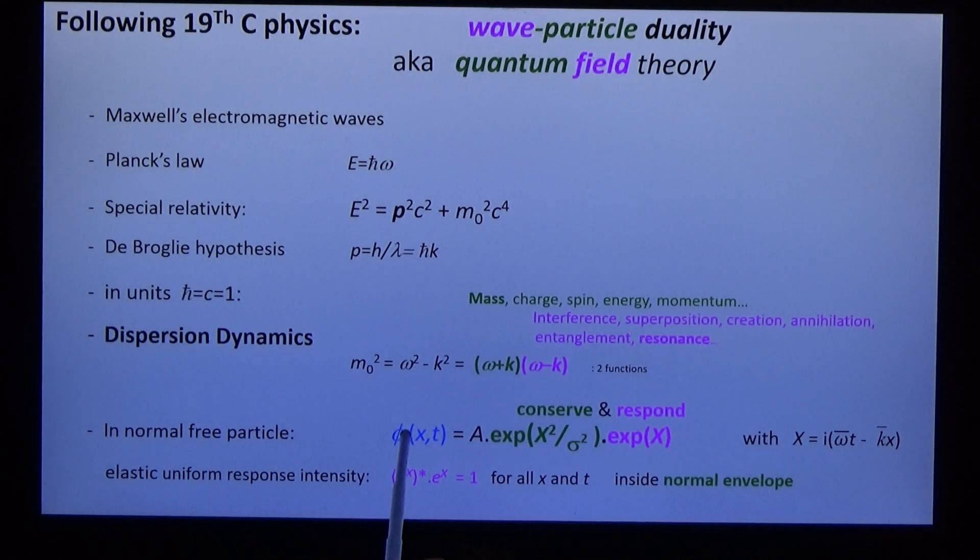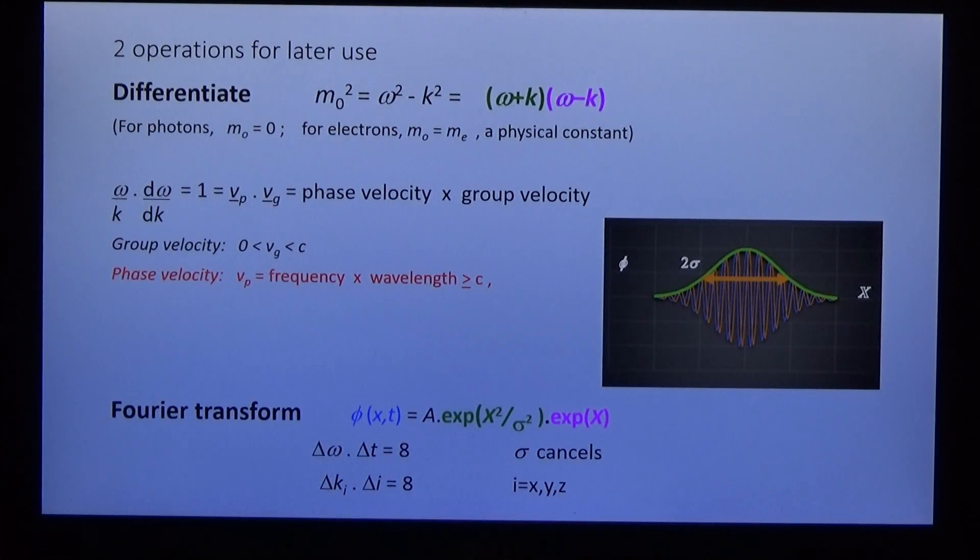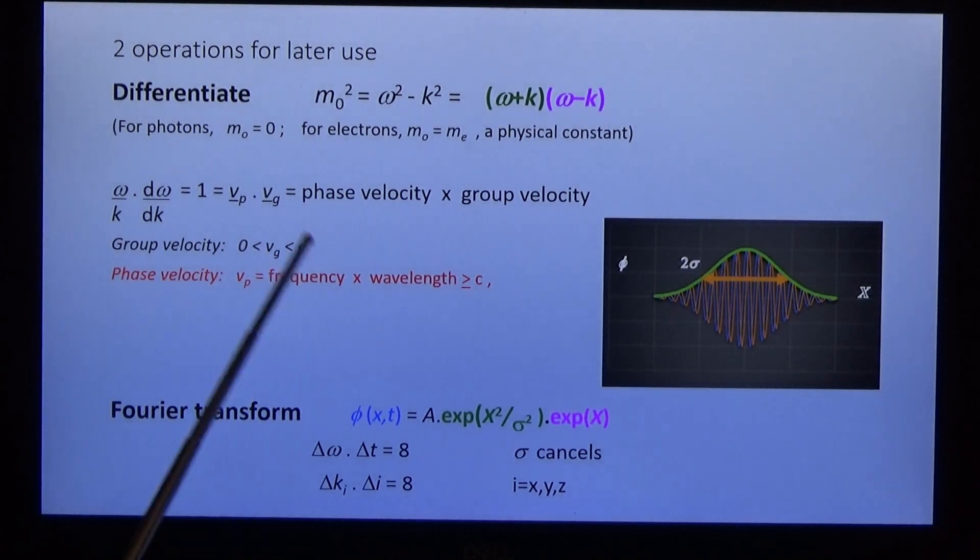From this can be derived a wave function, which is again conservative and response. The response part is an infinite wave with unit amplitude for all x and t. We can operate on this wave in many ways. Today we just need differentiation and the Fourier transform.